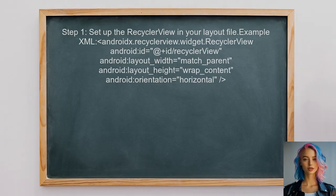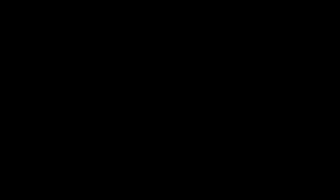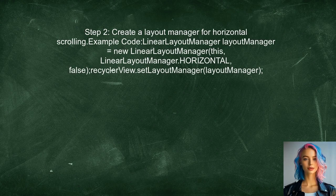To create a horizontal recycler view that scrolls from right to left, you should first set up the recycler view in your layout file. This involves adding the recycler view widget to the XML layout. Next, you need to create a layout manager for the recycler view. For horizontal scrolling, you should use the LinearLayoutManager and set its orientation to horizontal.